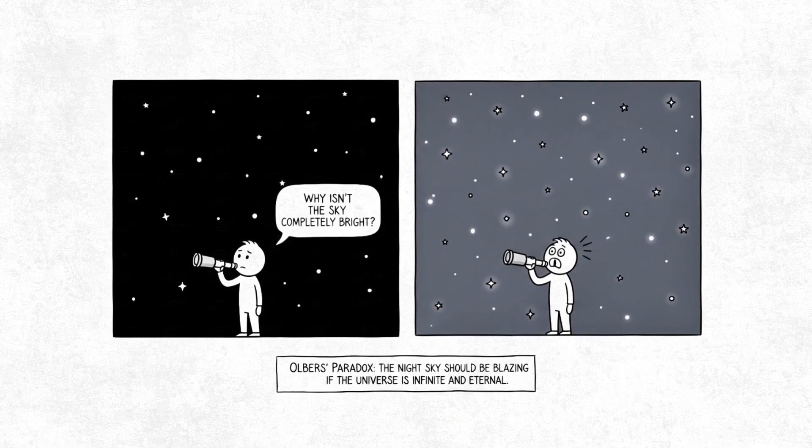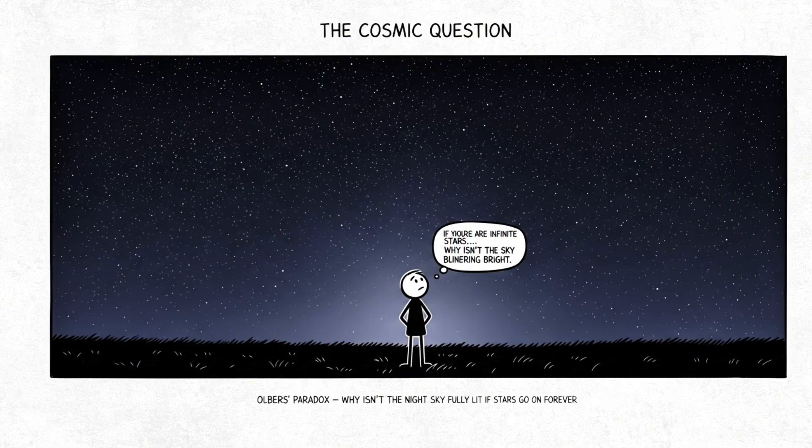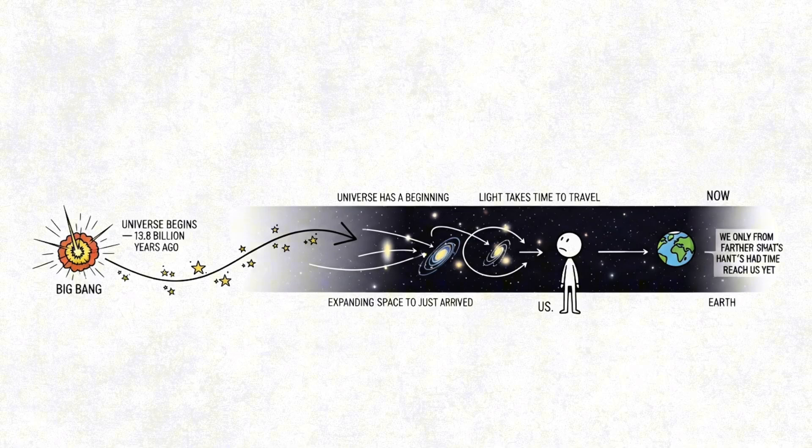This is known as the Olbers Paradox, the question of why the night sky isn't bright if the universe has infinite stars. The answer? The universe isn't infinite in age, and light has only had so much time to travel.